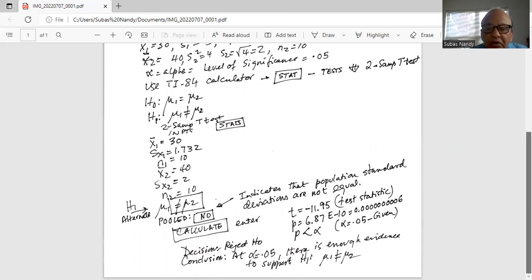Conclusion: at alpha equal to 0.05, there is enough evidence to support H1 because we have rejected H0. And the H1 is mu1 is not equal to mu2.